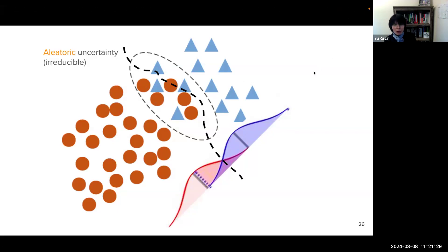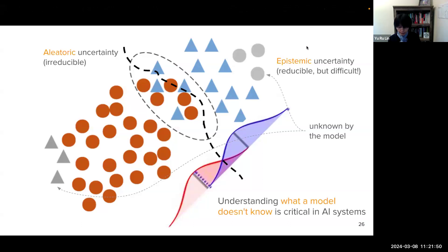For example, suppose we wish to detect two classes of objects. And based on the training data, our model learns the feature distribution. And because of the unavoidable overlapping between the two classes, the model is unable to make accurate prediction in this area. So this is called aleatoric uncertainty. And this is irreducible. However, the model only has limited knowledge about the feature distribution. When new instances fall outside the model's knowledge, these are unknown by the model. So this is epistemic uncertainty. And they are reducible, but very difficult.